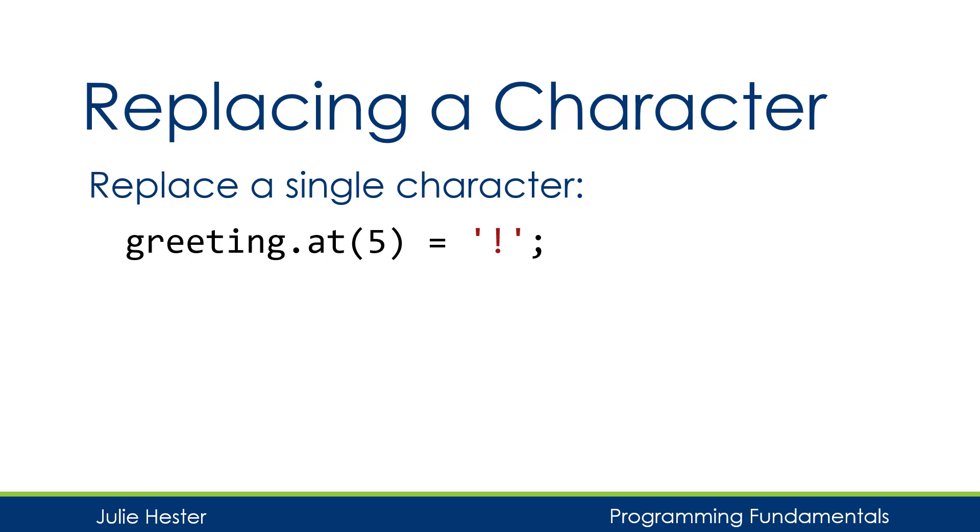Another thing I can do with strings is I can replace part of the string. Here I'm replacing a single character. For my greeting string that was hello period, I've decided I want to change the punctuation from a period to an exclamation mark. The greeting string has six characters in it, so the last index is six minus one or five. I can say greeting dot at five and assign the exclamation mark character to that particular character with the assignment operator, the equal sign. If I display the string after I make the modification, I'm going to see that now it says hello exclamation mark.